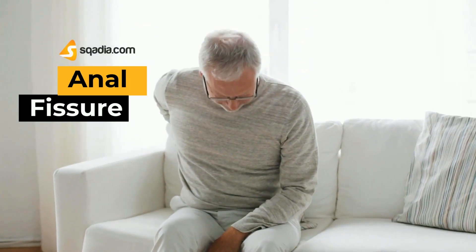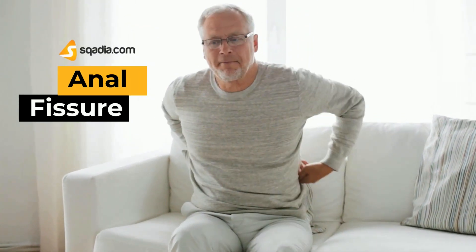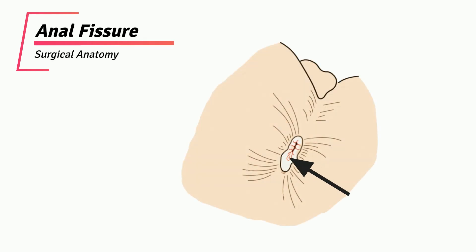Anal fissures typically cause a sharp pain that starts with the passage of stool. An anal fissure is a longitudinal split in the anaderm of the distal anal canal, which extends from the anal verge proximally towards, but not beyond, the dentate line.